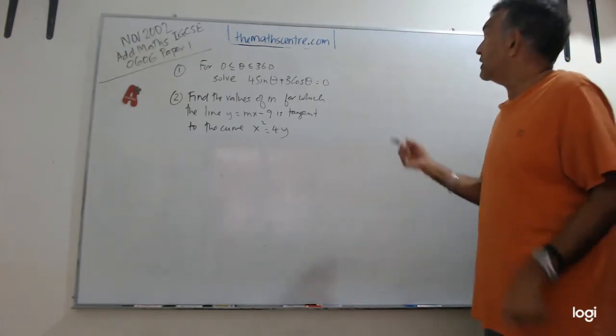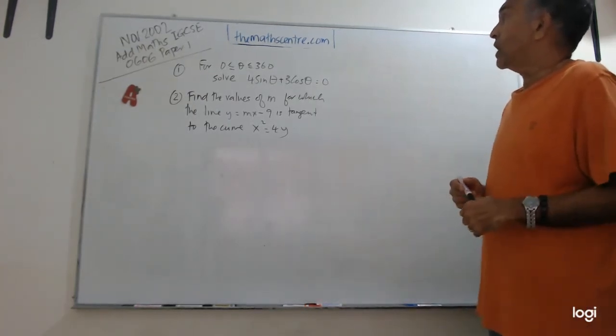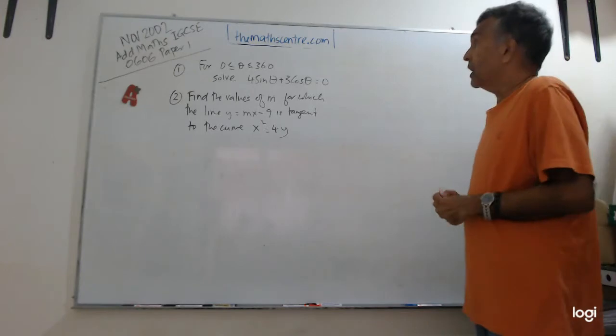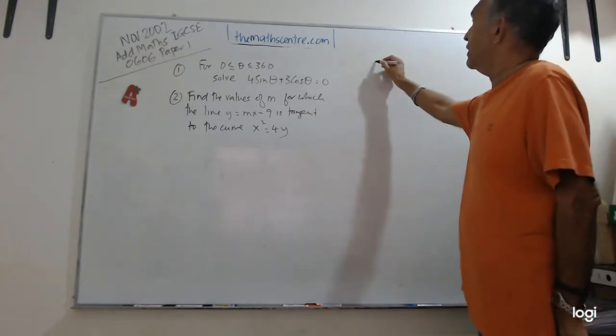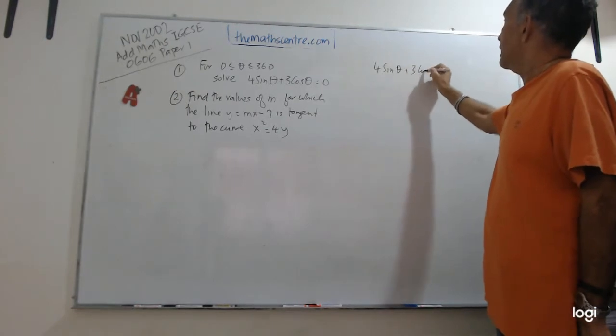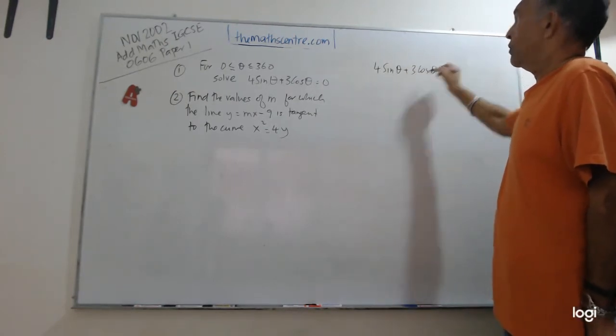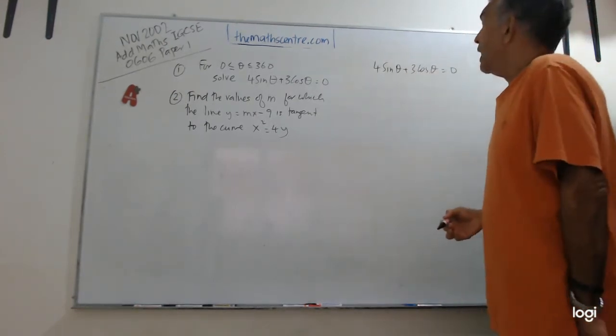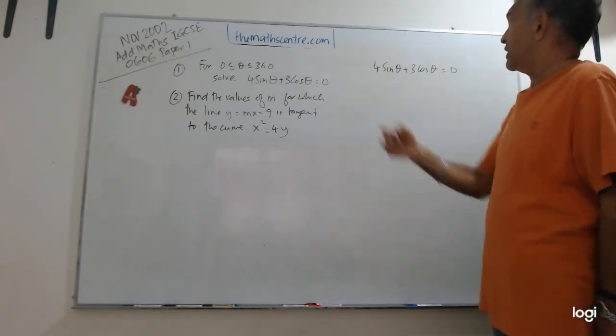Okay, let's start. We have question number 1 here for angles between 0 and 360. We're asked to solve 4 sin theta plus 3 cos theta equals 0. This was number 1 on the exam.